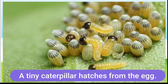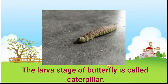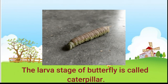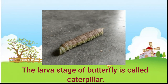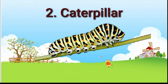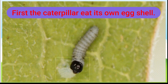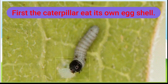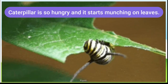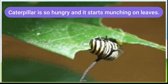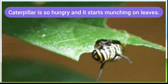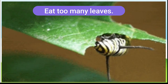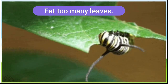The larva stage of the butterfly is called the caterpillar. When caterpillars come out from the egg, they are very hungry. First, the caterpillar eats its own eggshell. Still hungry, it starts munching on leaves and eats too many leaves, becoming big and fat.